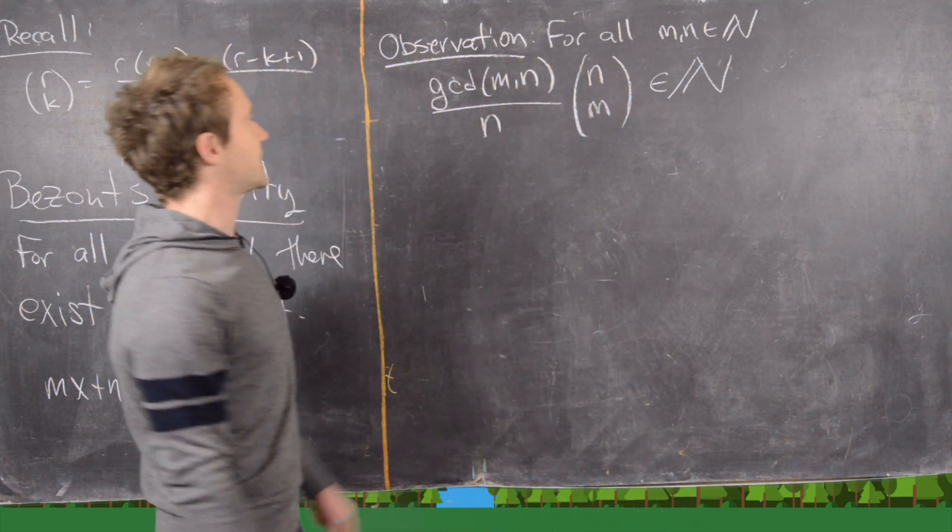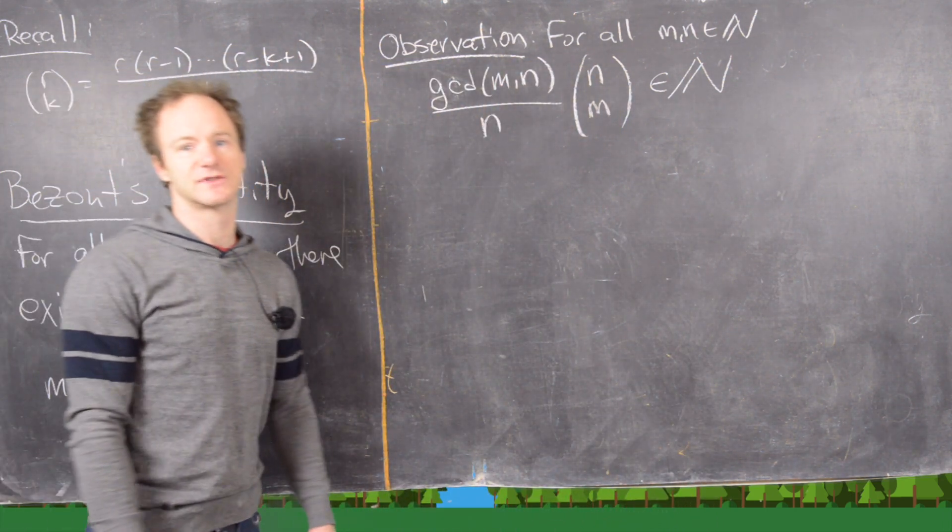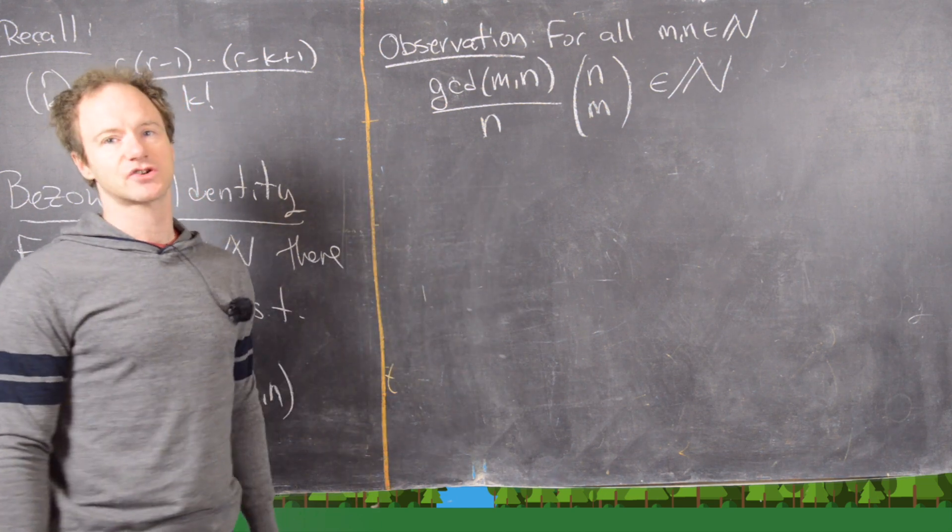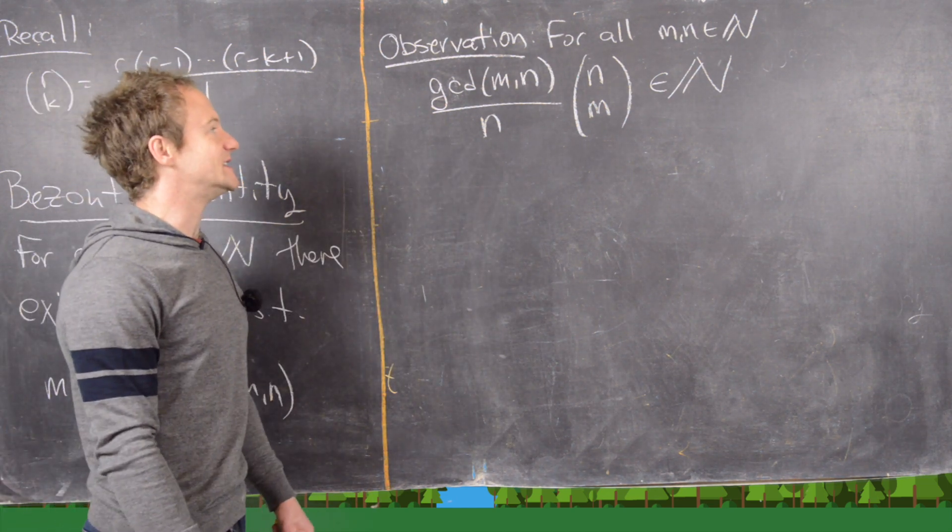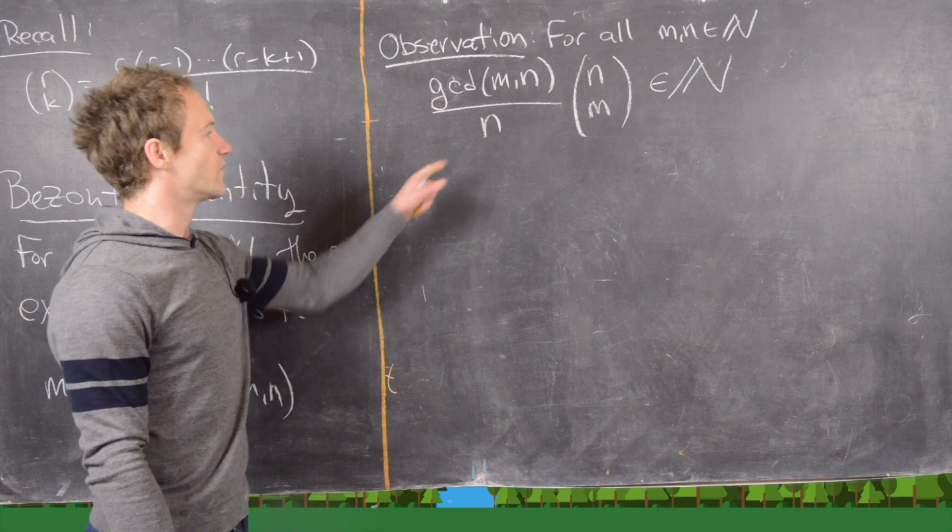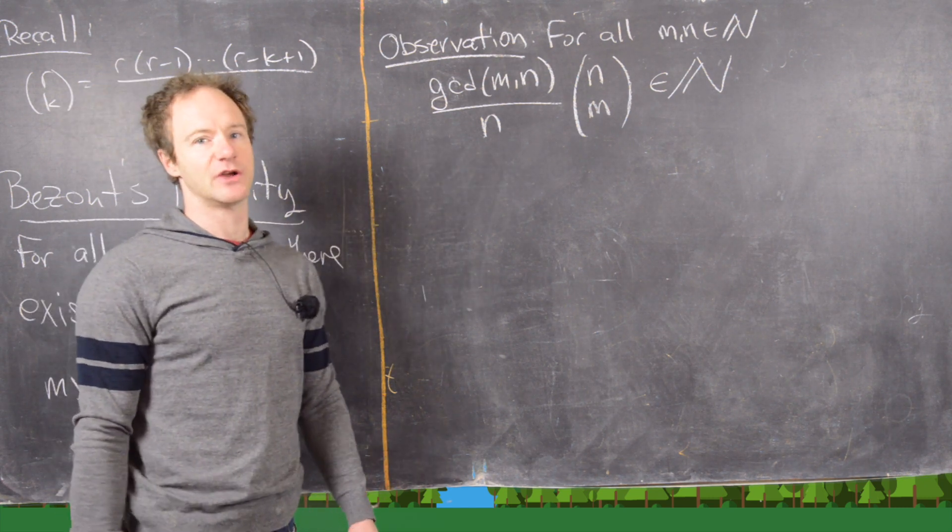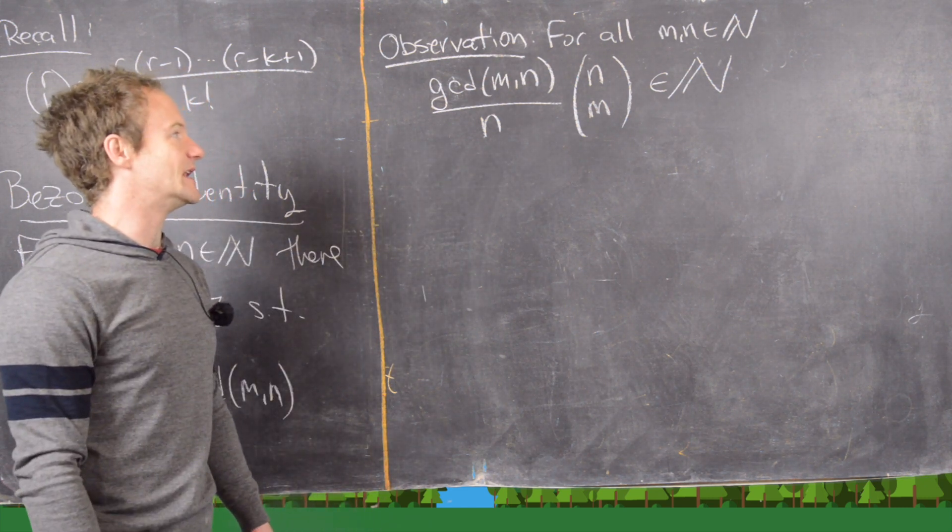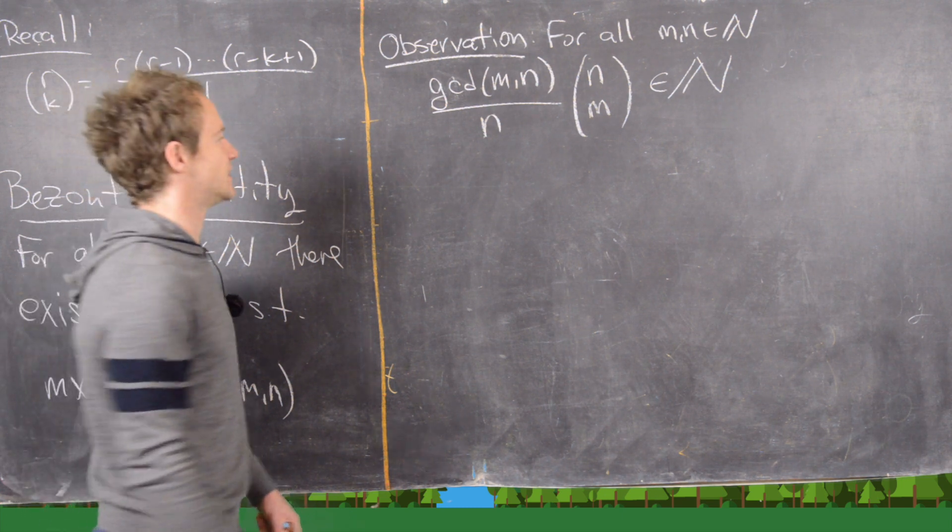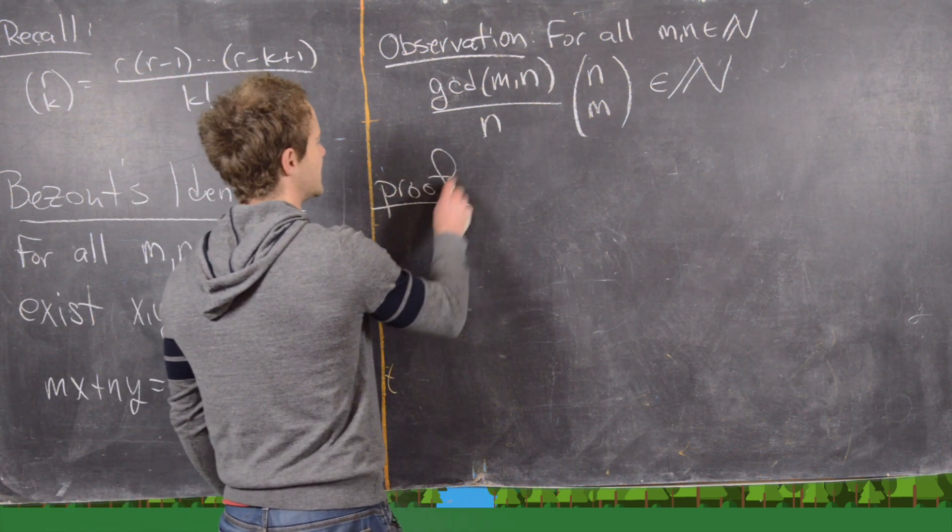So the quick result that I want to look at here is the following observation. So for all natural numbers m and n, the GCD of mn over n times this binomial coefficient n choose m is a natural number. So let's go ahead and look at the proof of this.